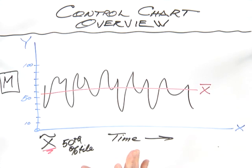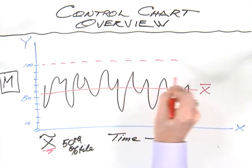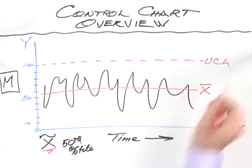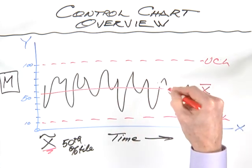Now, on the run chart, we didn't have control limits. That's one of the advantages of moving to a control chart. You end up getting what are called the upper control limit and the lower control limit. These two boundaries help to define the variation in the process.